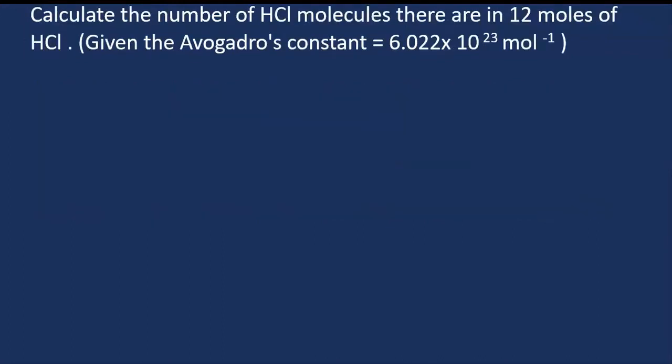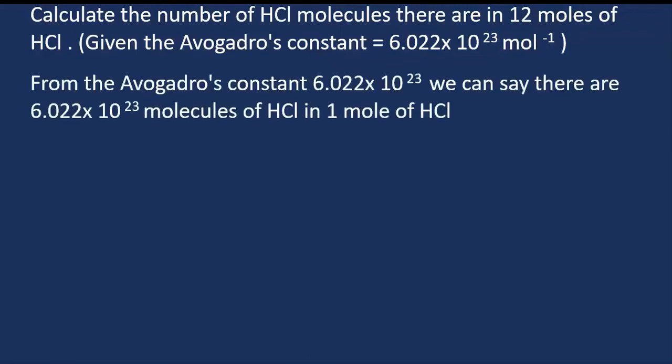Here is another example. Feel free to pause the video and give it a go. Calculate the number of HCl molecules in 12 moles of HCl, given the Avogadro's constant is equal to 6.022 times 10 to the power 23 per mole. From the question, the Avogadro's constant is equal to 6.022 times 10 to the power 23. We can say that there are 6.022 times 10 to the power 23 molecules of HCl in one mole of HCl.